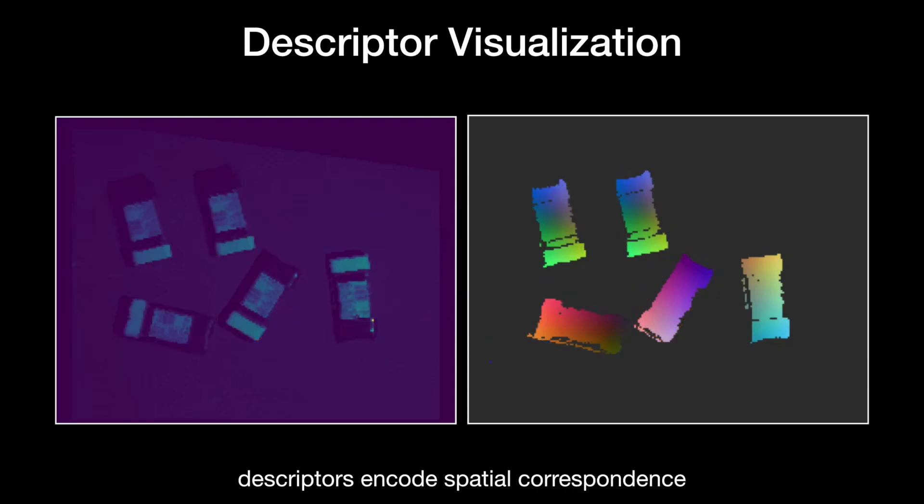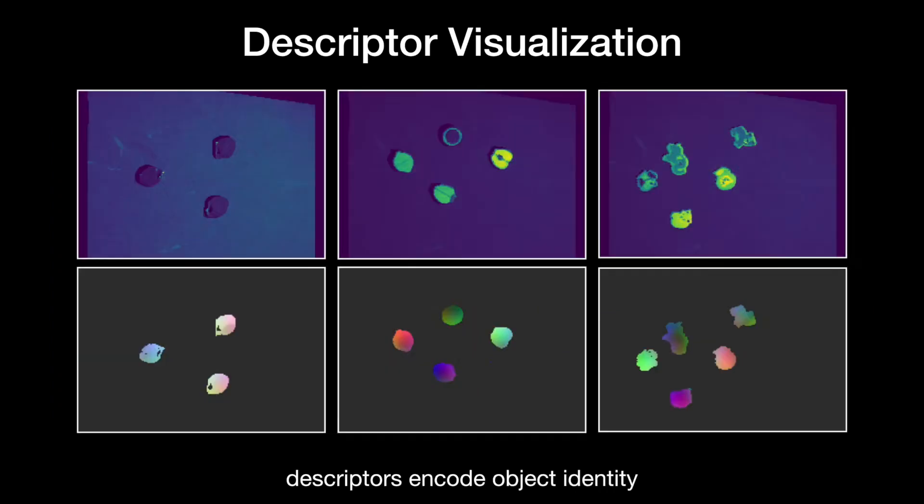Second, that they have learned spatial correspondence, since same points on the same oriented objects share similar descriptors. And finally, that they have learned to encode object identity, with different zoo animals and fruits exhibiting different colors.